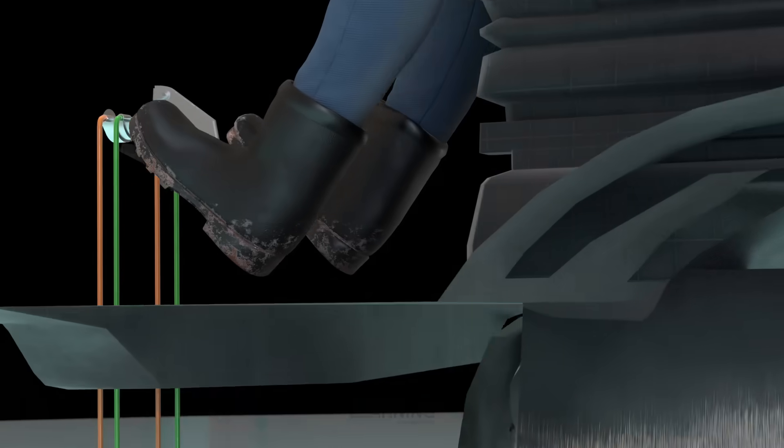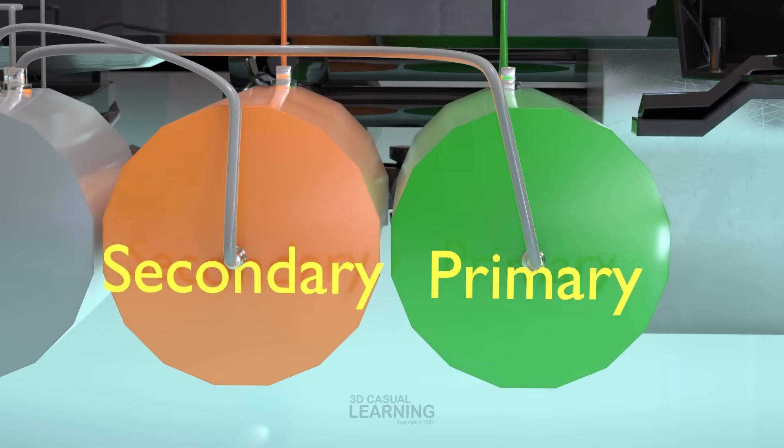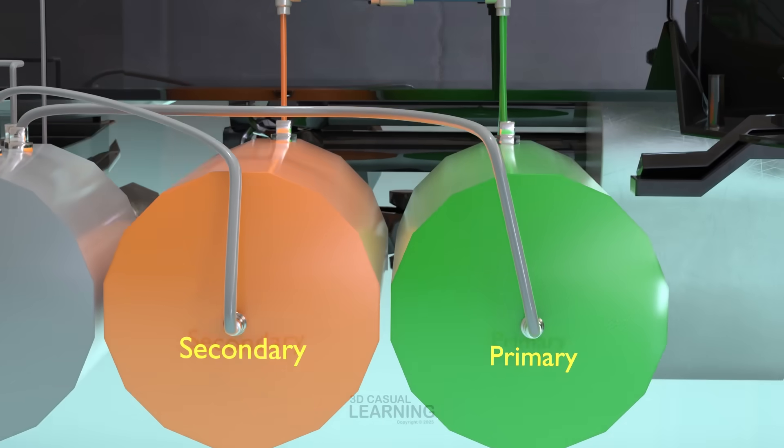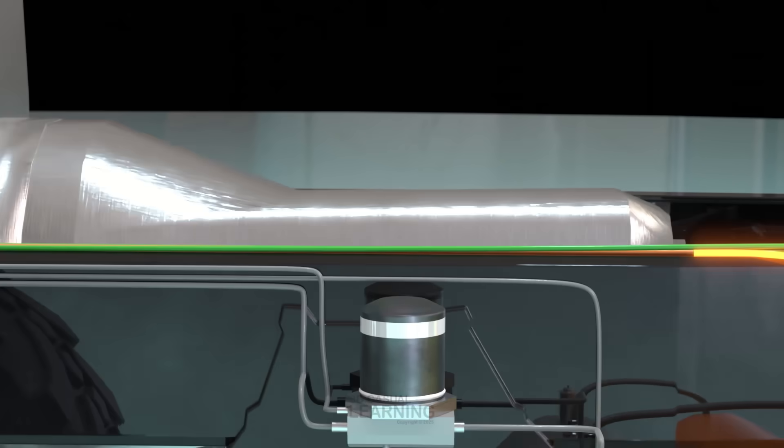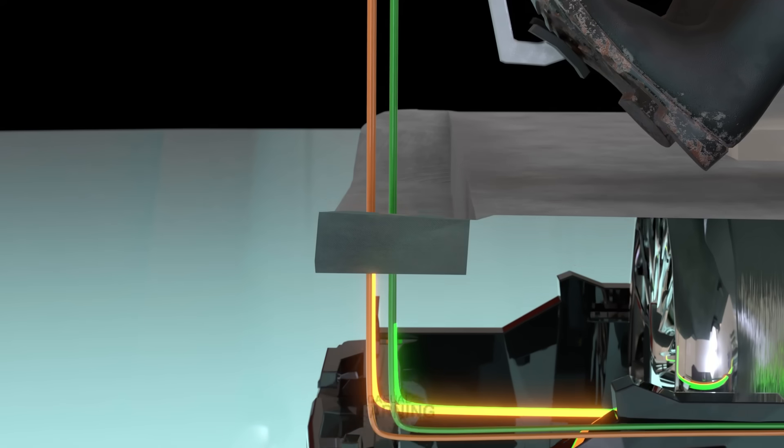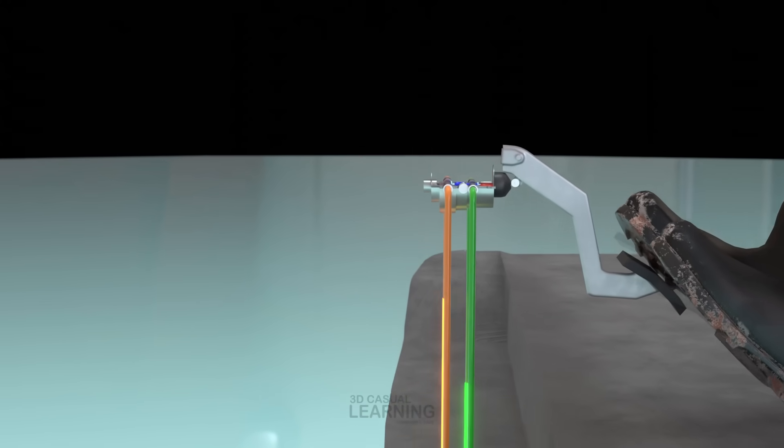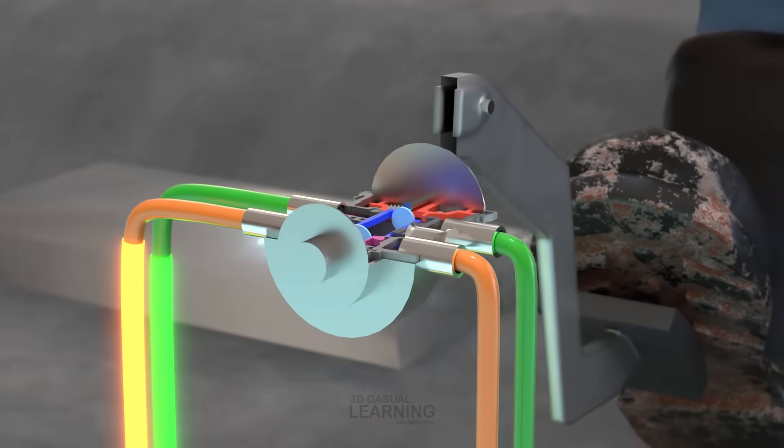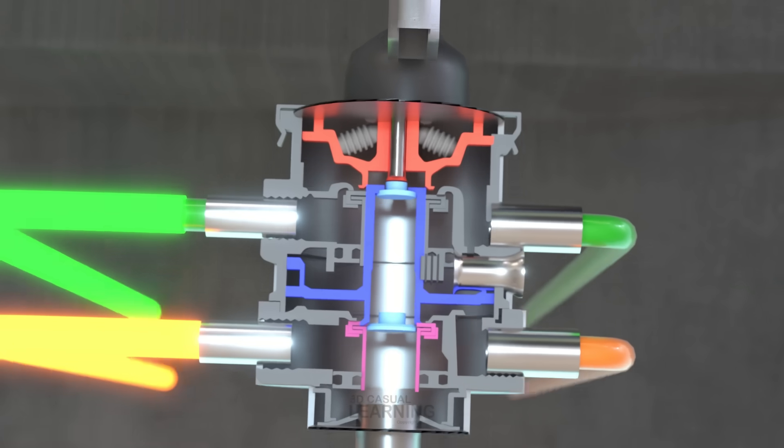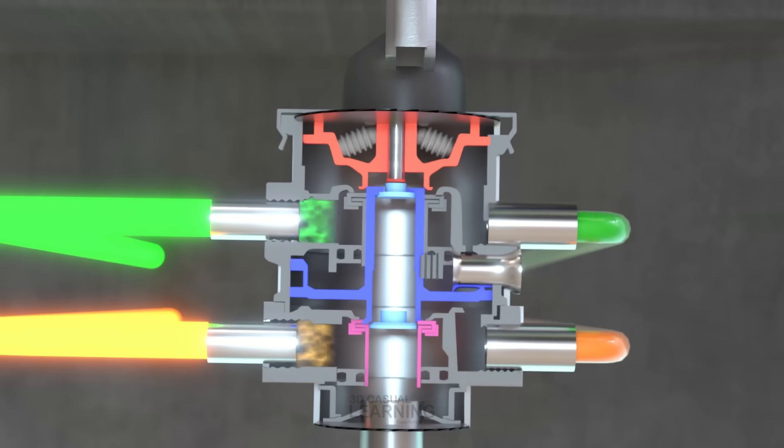Each reservoir delivers compressed air to its designated supply port on the dual brake valve. The primary reservoir supplies air for the rear service brakes and the parking brake, while the secondary reservoir serves the front service brakes. In the valve's default, unactuated state, both circuits are closed, and the delivery ports are open to the atmosphere, venting through the exhaust.